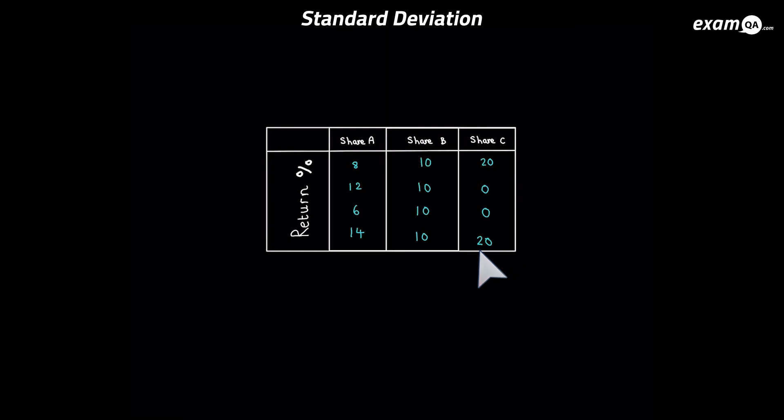So you've probably chosen a share. Now what we're going to do is work out the average return each one gave to help us choose a share. Now you should be able to work out the average. You just add them up and divide it by how many there is. For example with share B you just do 10 plus 10 plus 10 plus 10 which is 40 and you divide by 4. So that 40 divided by 4 is 10. I'm sure you've got no problems working out the mean. So go ahead and do that for all three of them.